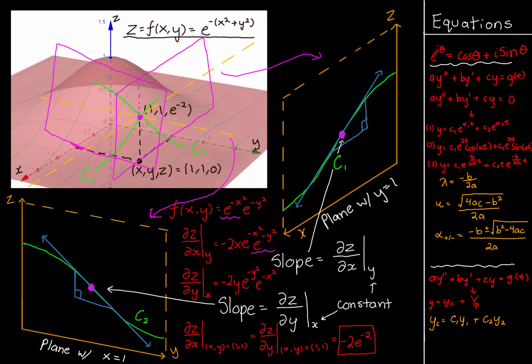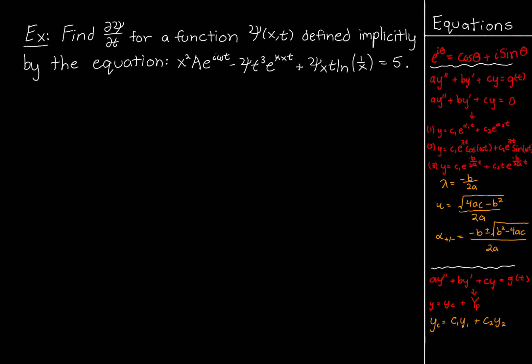Hopefully you understood that visual representation — it's basically just the slopes of the tangent lines at the same point, except we look at one along the xz plane and one along the yz plane. Let's move on and look at a more algebraically complicated example. I created this example myself, and I apologize in advance because I made it a lot more complicated than I initially intended. However, I think it is good practice for when you will take partial derivatives in later courses and apply them to more complicated functions.